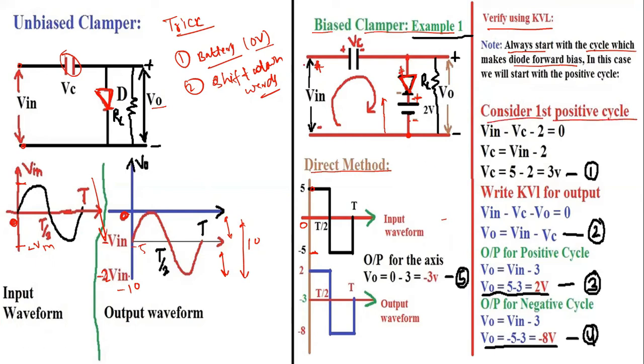Now let's verify using KVL. For clamper circuits, always start with the cycle which makes the diode forward bias. Looking at the diode direction, if we start with positive cycle and apply plus here, the diode becomes forward biased and the capacitor charges. So we consider first positive cycle and apply KVL in the inner loop.